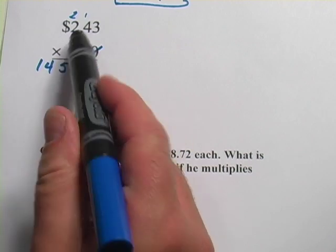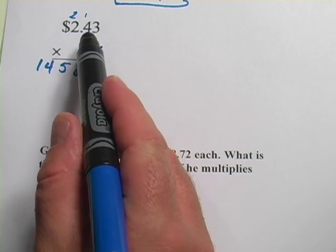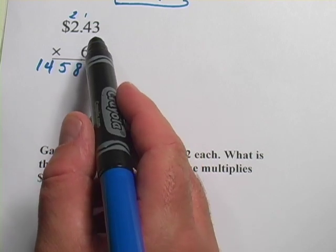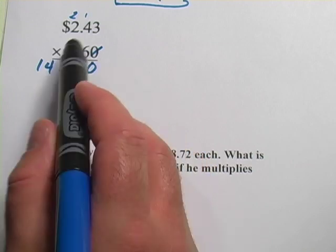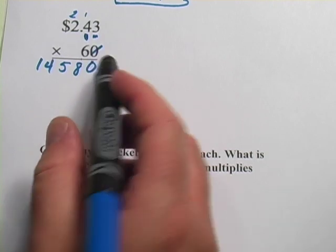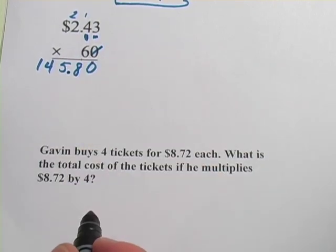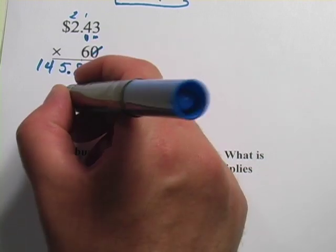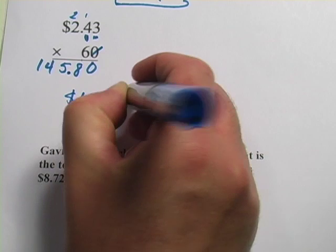But I've got to put my decimal point in. And the rule with this is you count how many digits are behind the decimal point. It could be on top, could be on bottom. You count them all. In this case, there's only ones on top, and there's only 2. The 4 and the 3 are behind the decimal point. So that's 2. So I count over 1, 2 spaces. That's where I put my decimal point. So our answer here is $145.80.